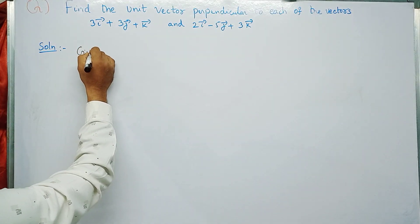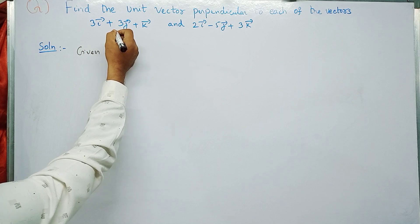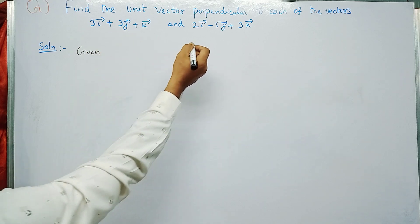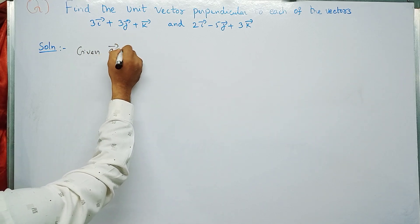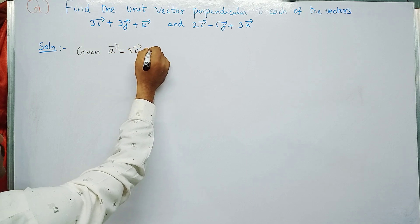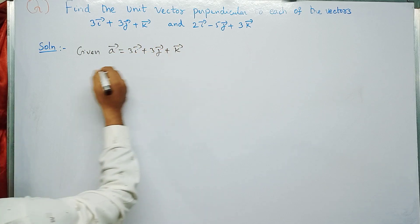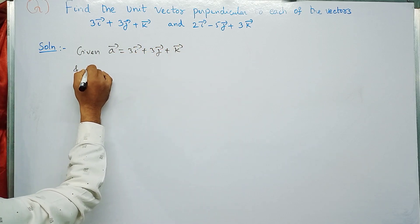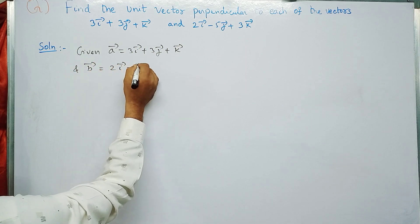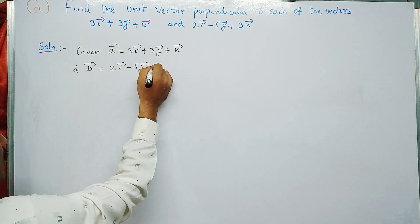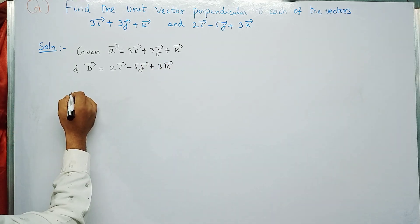Given: a-bar = 3i + 3j + k, and b-bar = 2i - 5j + 3k.